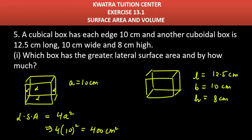Now you have to find the lateral surface area of this one and by how much. So here we have to find the formula. What is our formula? 2 × h × (l + b). 2 × 8, l + b is basically what? 12.5 + 10. So this will be 16, this will be 22.5. If you multiply both you will get 360 cm².